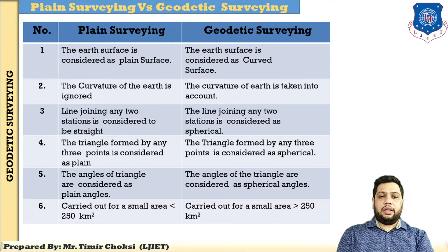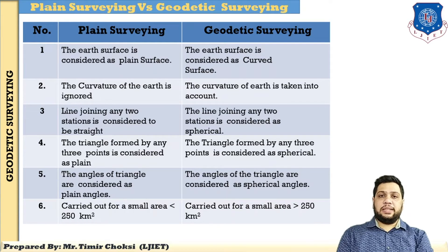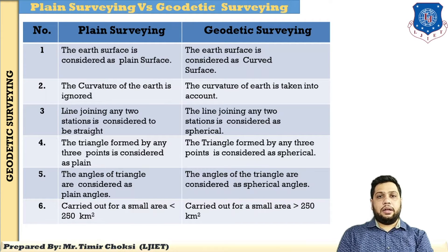In plane survey, the triangle formed by any three points is considered as a plane triangle, but in geodetic survey it is considered as a spherical triangle. Fifth difference: in plane survey, the angles of the triangle are considered as plane angles, but in geodetic survey they are considered as spherical angles. And last: plane survey is carried out for a smaller area — less than 250 square kilometres — but geodetic survey is carried out for a larger area greater than 250 square kilometres.